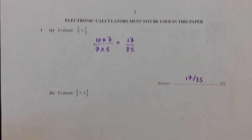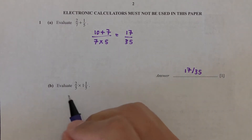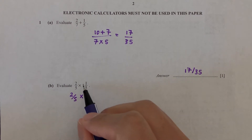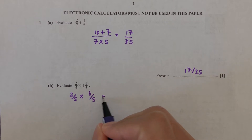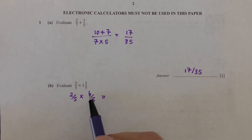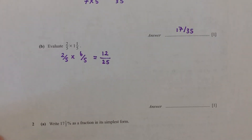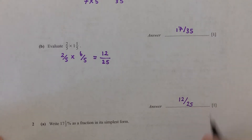Part B: evaluate 2 over 5 multiplied by 1 and 1 over 5. We first have to expand and break this down. 1 times 5 is 5, plus 1 is 6, so that's 6 over 5. Then 2 times 6 is 12, and 5 times 5 is 25. That is your answer: 12 over 25.